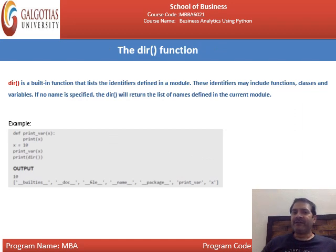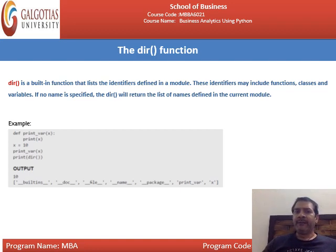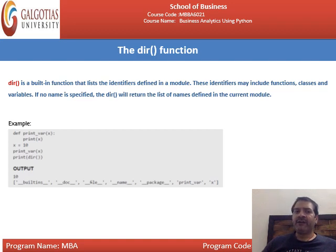The dir function is a built-in function that lists the identifiers defined in a module — these may include functions, classes, and variables. If no name is specified, dir() returns the list of names defined in the current module. For example: def print_where(x): print(x). x = 10, print_where(x), print(dir()). Output will include x = 10, and dir() prints built-in attributes like __doc__, __file__, __name__, __package__, and print_where.